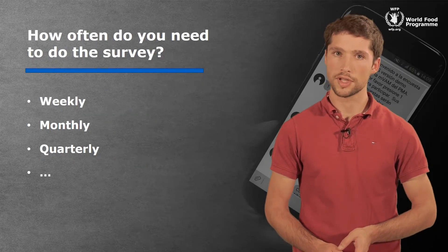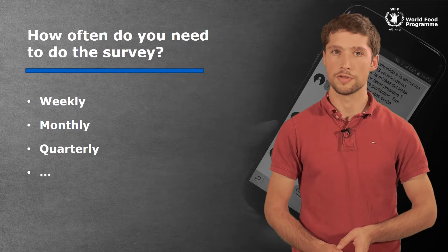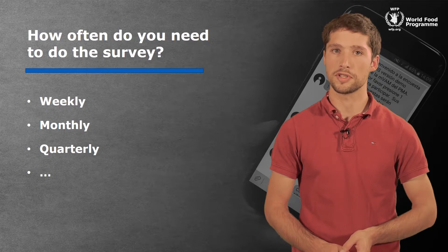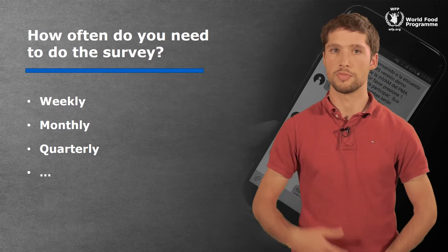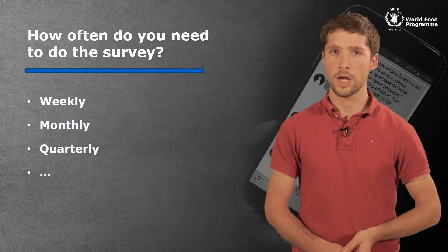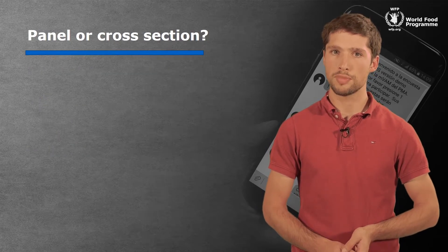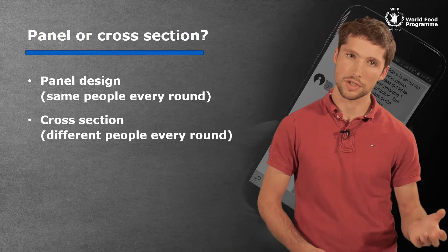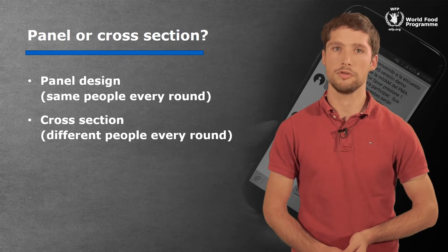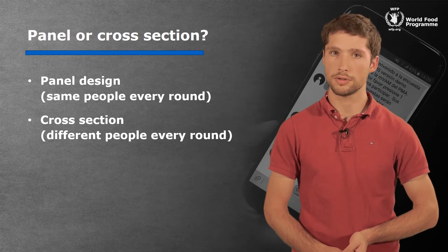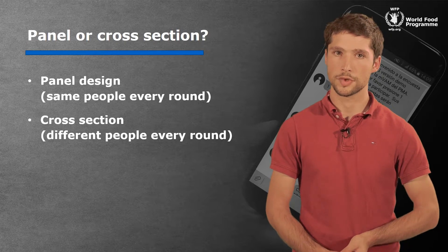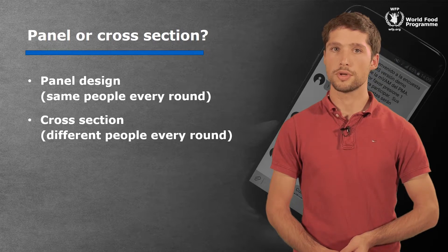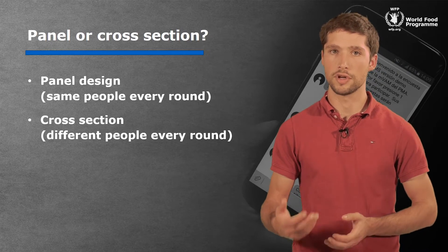Another question to think about is how often you need to do the survey. When designing your sampling approach, you need to decide the frequency — for example, whether it should be weekly or monthly. You then decide whether you call the same people every round, which is a panel design, or different people each time, which is a cross-section. With a panel design, you have to expect people to drop out after one or more rounds. With a cross-section design, you need access to enough phone numbers to draw new samples every round.